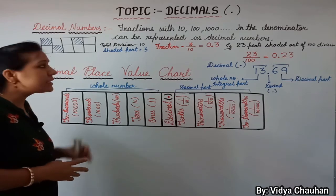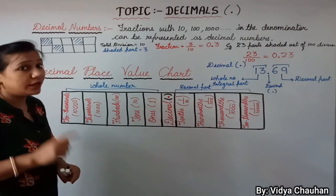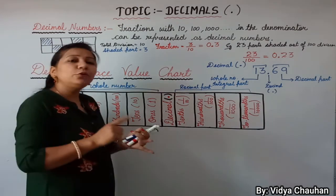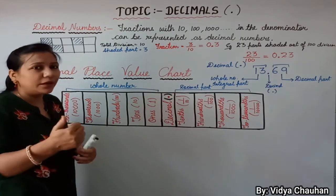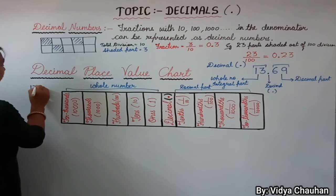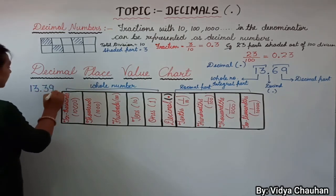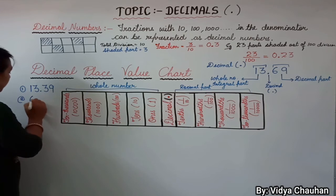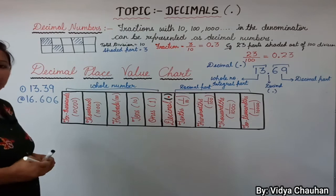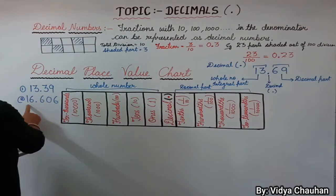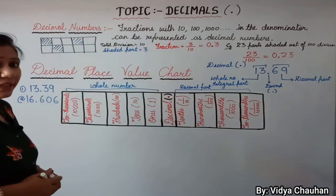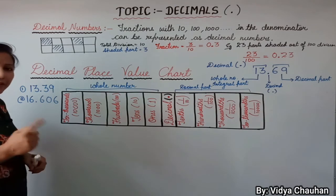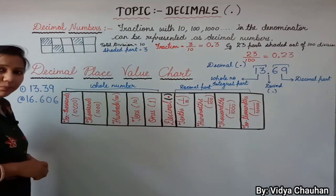You must be thinking: what is the purpose of learning this decimal place value chart? This chart will help you read any number and write the number name for any decimal number. For example, suppose the numbers 13.39 and 16.606 are given and you are asked to write the number names. This decimal place value chart will help you do that.